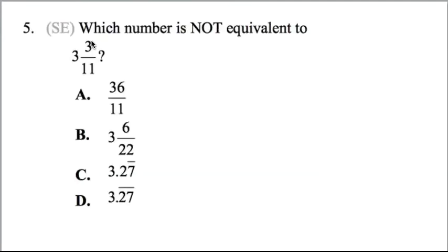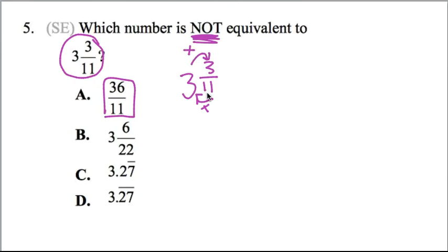Number five, which number is not equivalent to three and three elevenths? So we're looking for not equivalent. So in order to do that, your best bet is to go through each option and see, can I make 36 elevenths equal three and three elevenths? Well, A is an improper fraction. So if I take three and three elevenths and make it improper, multiply and then add, so 11 times three is 33, 33 plus three is 36. These are equivalent, so A is not an option. B, could I turn three and six over 22 into three and three elevenths? Well, if I divide two out of each of these numbers, I get three and three elevenths. Those are equivalent, so B is not an option.